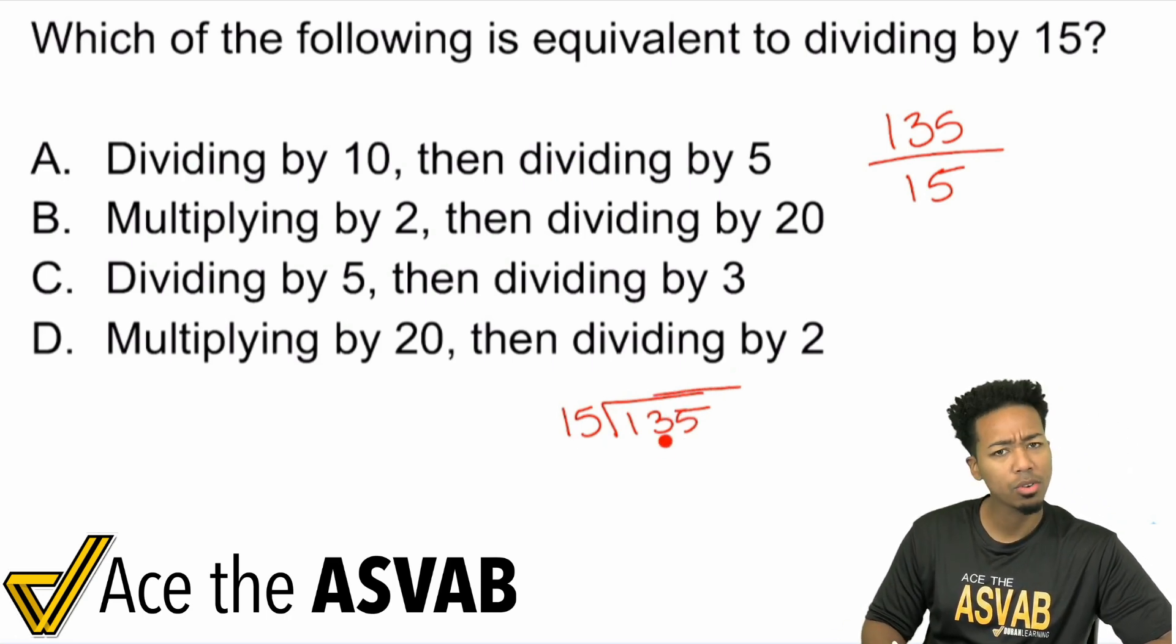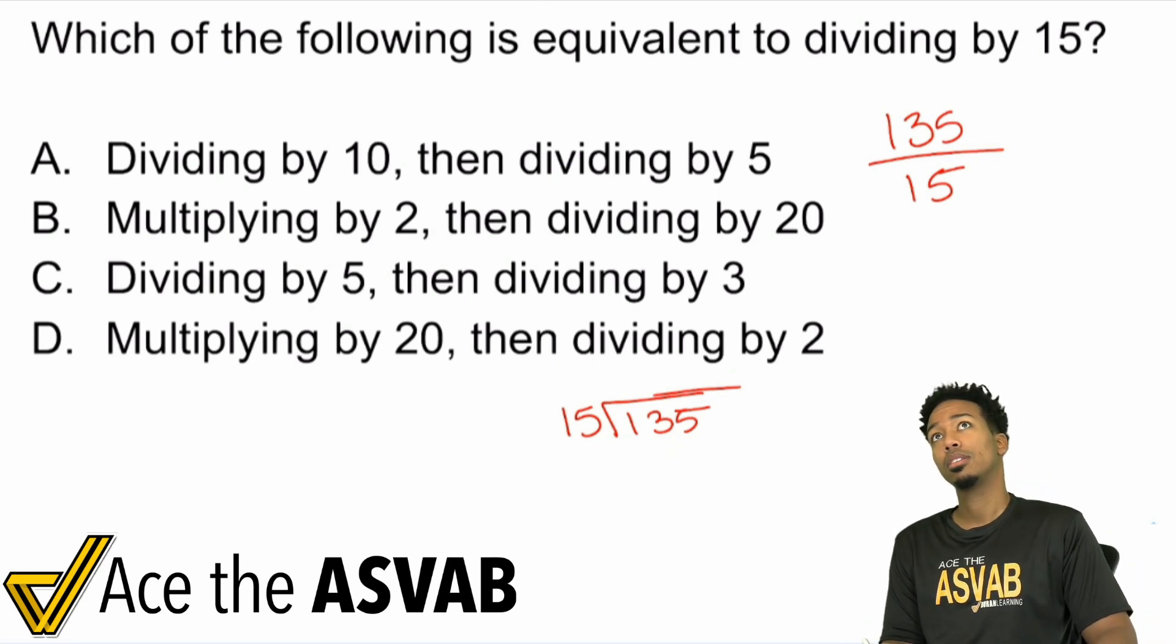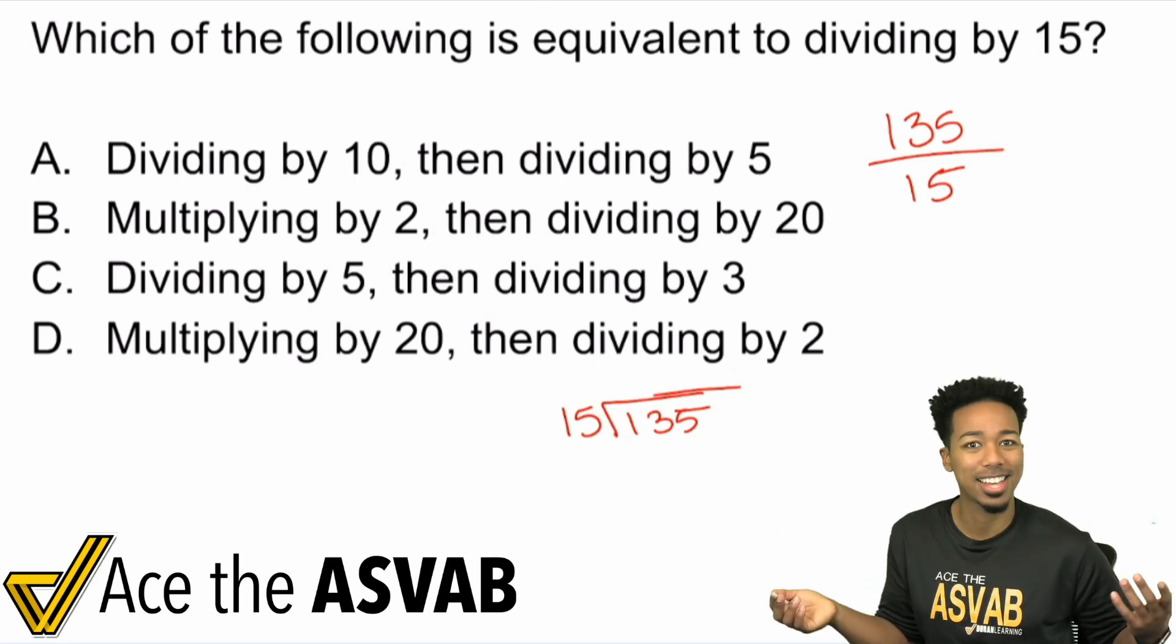We end up trying to say, 15 goes into one. It doesn't happen. 15 goes into 13. It doesn't go in. 15 goes into 135. Okay, what's that going to be? Right? Why do long division if you still got to guess and figure things out anyway?